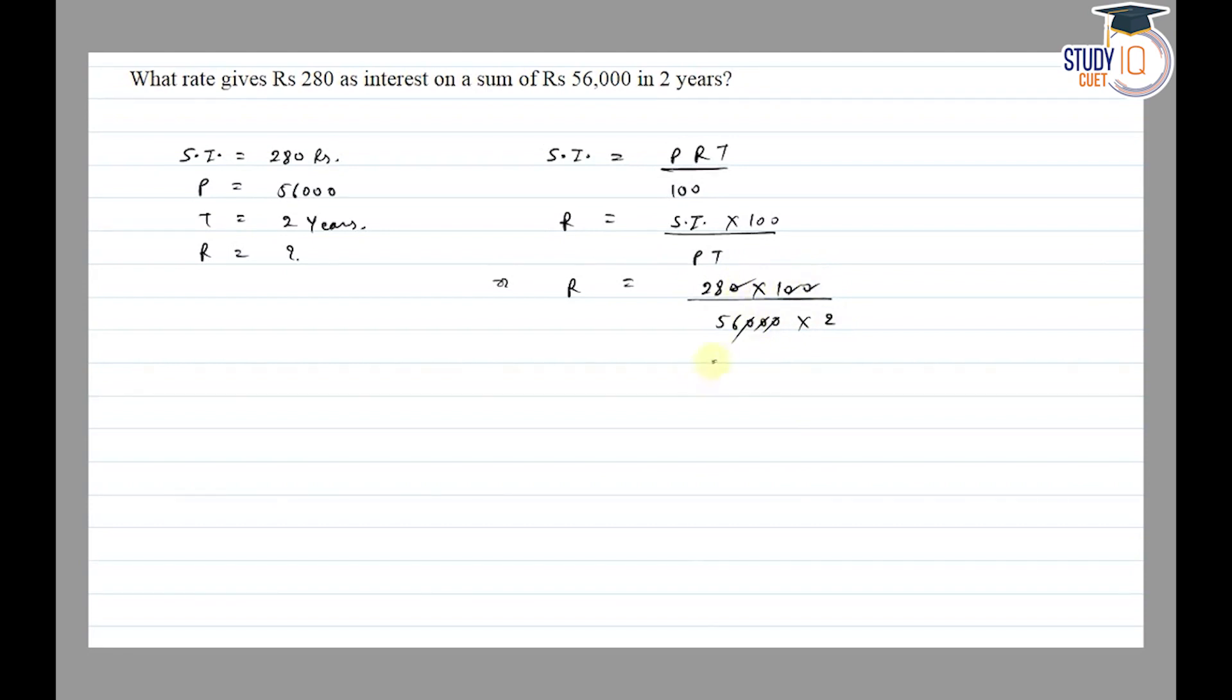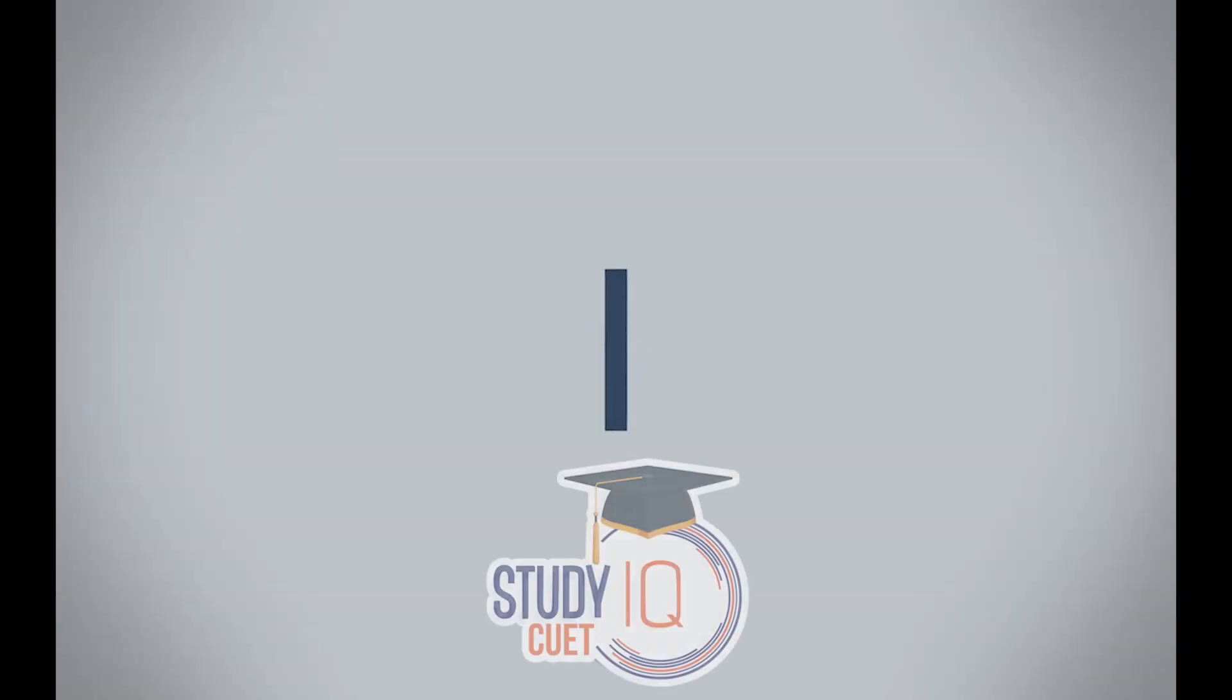And 28 to 56, so we have one by four. So r is equal to 0.25 percent. So here we have a rate of 0.25 percent. Thank you.